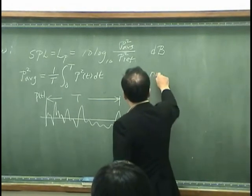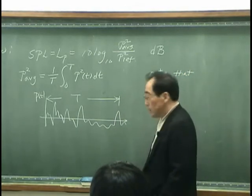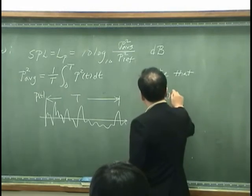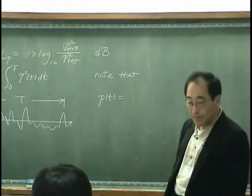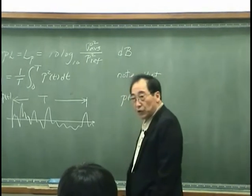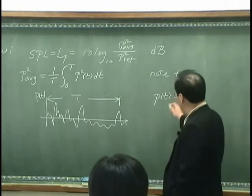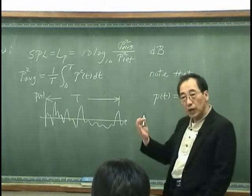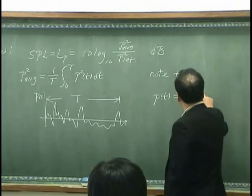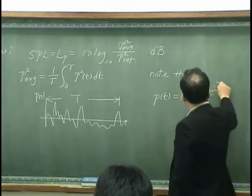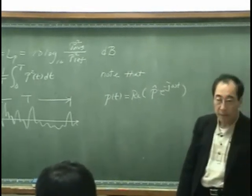And, note that we can write Pt, that is the pressure, fluctuating pressure in time. And, if we use complex notation, I can write this as real part, or if you like, imaginary part. That's your choice. Real part of P. That's what I can write.